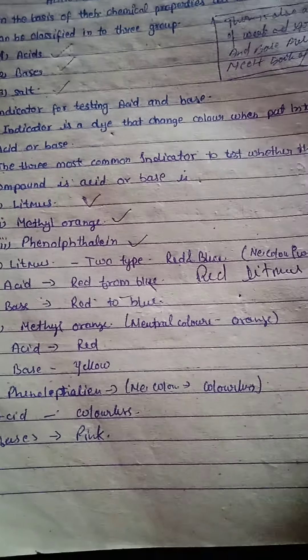Yet another acid-base indicator is universal indicator, like red cabbage extract. When it reacts with acid it will turn red, when it reacts with base it will turn green.